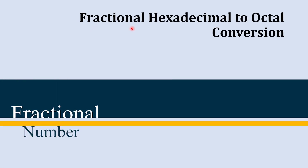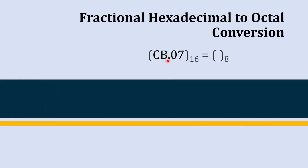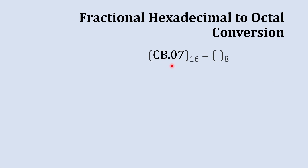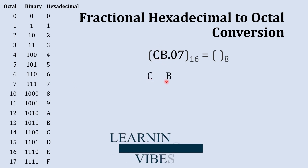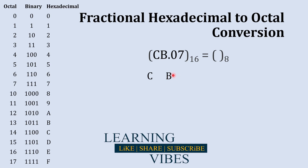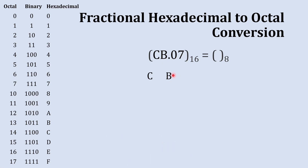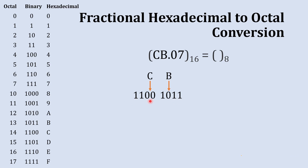Now we convert a fractional hexadecimal number into octal. Using the conversion table, we take the whole number part, CB. Starting with B, its binary equivalent is 1011. The binary equivalent of C is 1100. Combining these, the whole number part in binary is 1100 1011.